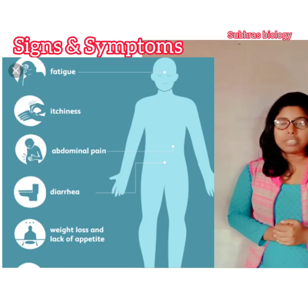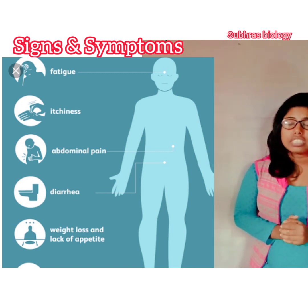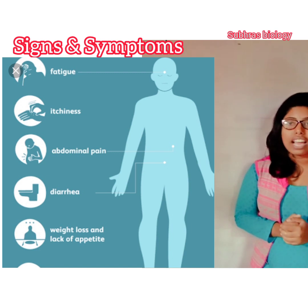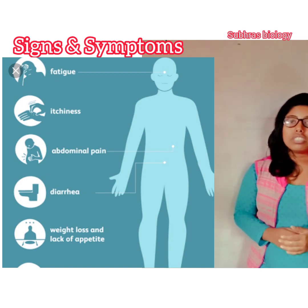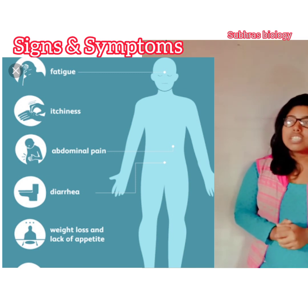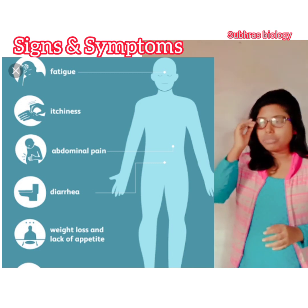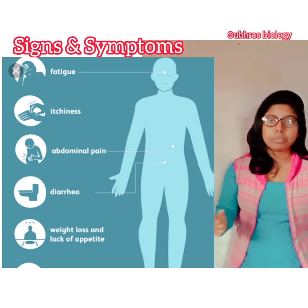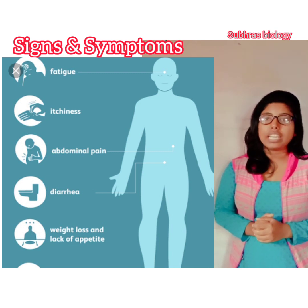The signs and symptoms of hookworm disease: the first sign of infection is itching and a local rash, often seen within 1 to 3 days of first infection. In case of heavy infection, symptoms include abdominal pain, diarrhea, weight loss, fatigue, and anemia.